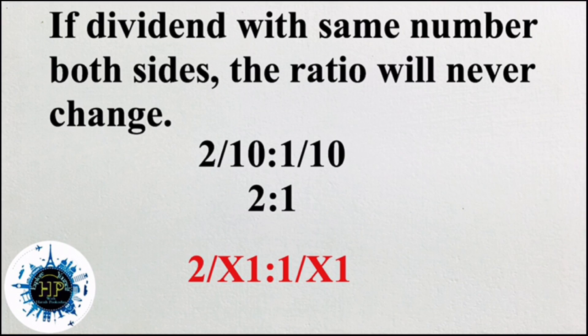Similarly, if you are dividing with the same number on both sides, in this case also we cannot get any changes on the ratio — it remains the same. Here we are dividing by 10: 2 by 10 is to 1 by 10. After the division, we can see that the ratio 2 is to 1 always remains. That means 2 by X1 is to 1 by X1. These concepts will be helpful for solving problems, so remember them.